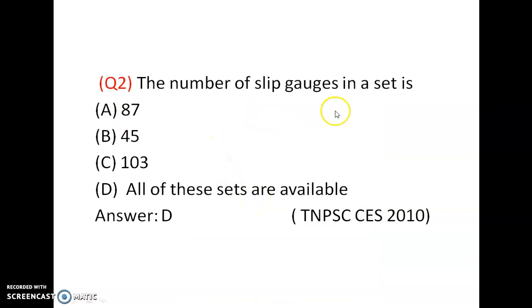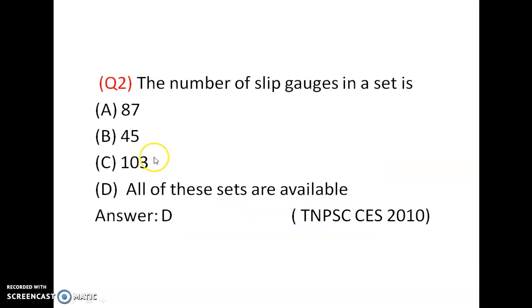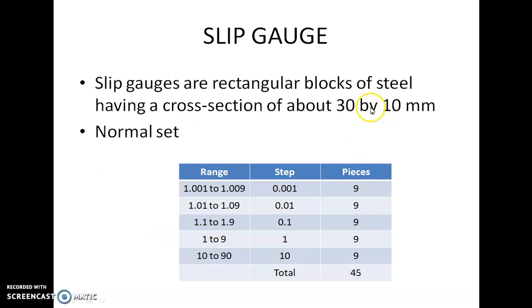The number of slip gauges in a set is 87 and a 45 slip gauge set is also available. A set of 103 is also available, so the answer is D. In the 45-piece set, the cross section is 30 × 10 mm but the thickness is different.